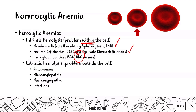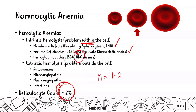One thing to understand when it comes to hemolytic anemias is that your body is going to be upregulating the production of red blood cells because you are losing red blood cells. In that upregulation, you are going to release immature red blood cells called reticulocytes, and your reticulocyte count is going to be greater than 2%. In normocytic non-hemolytic anemias, you're going to have a normal reticulocyte count, whereas in hemolytic anemias, you're going to have an elevated reticulocyte count.